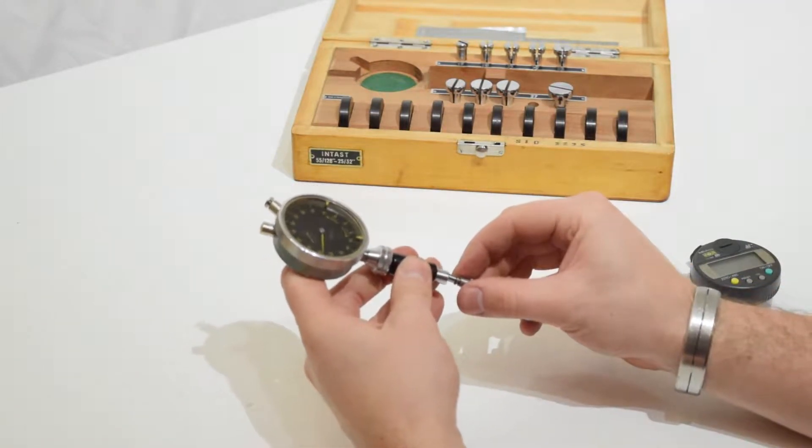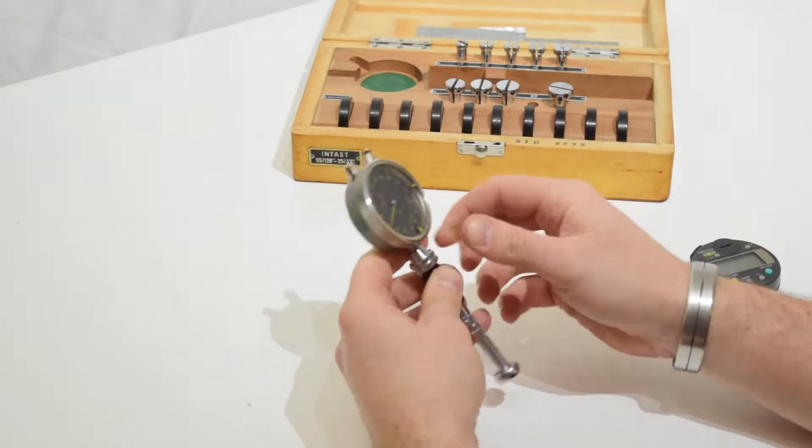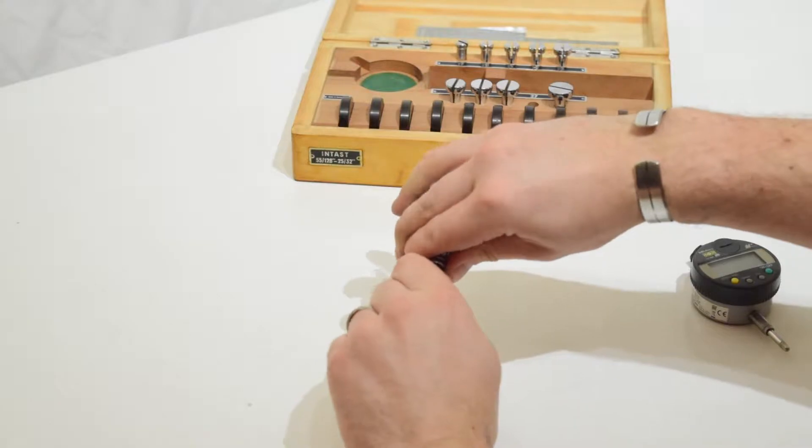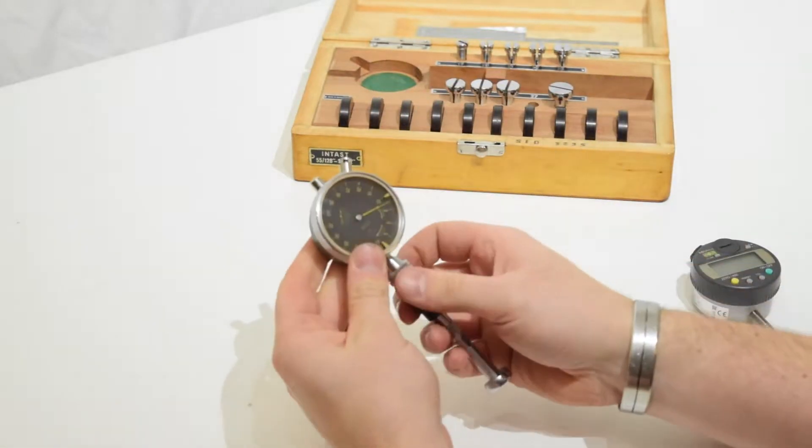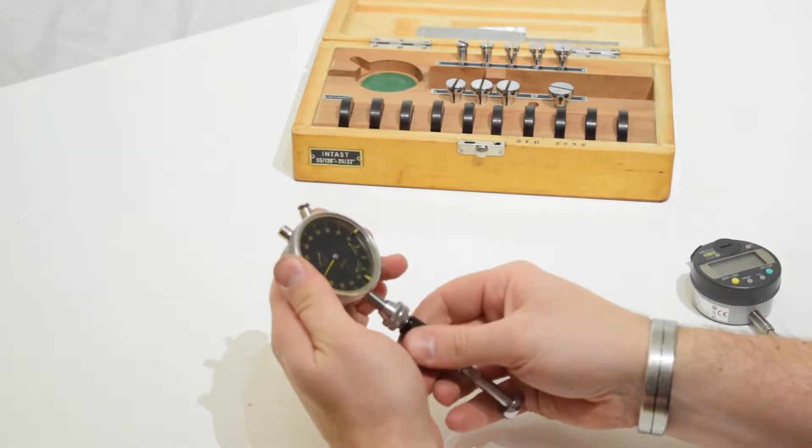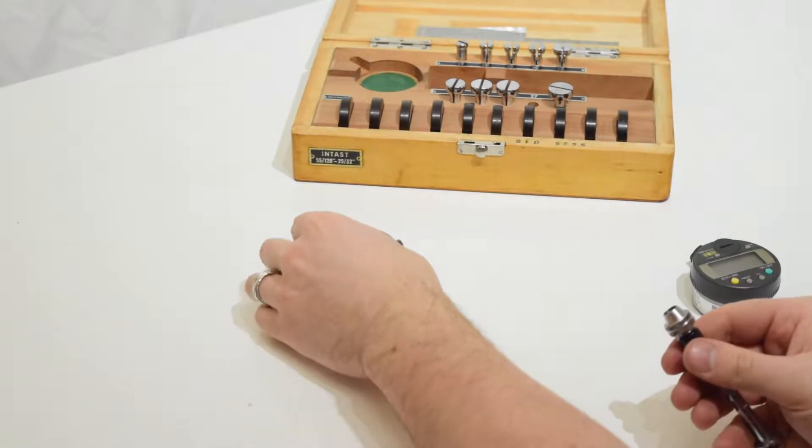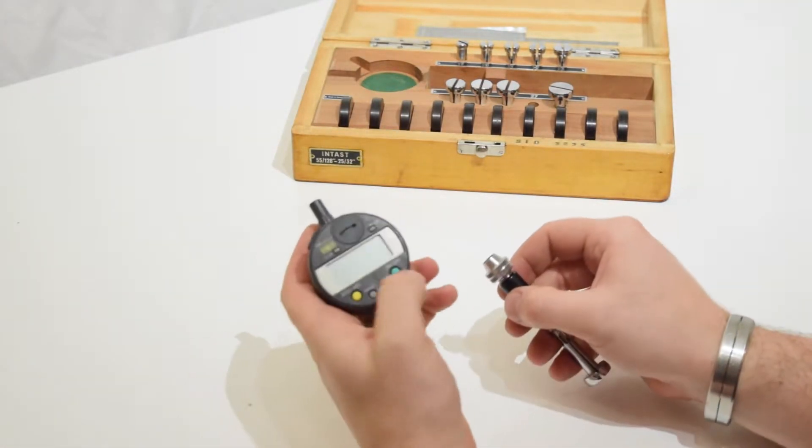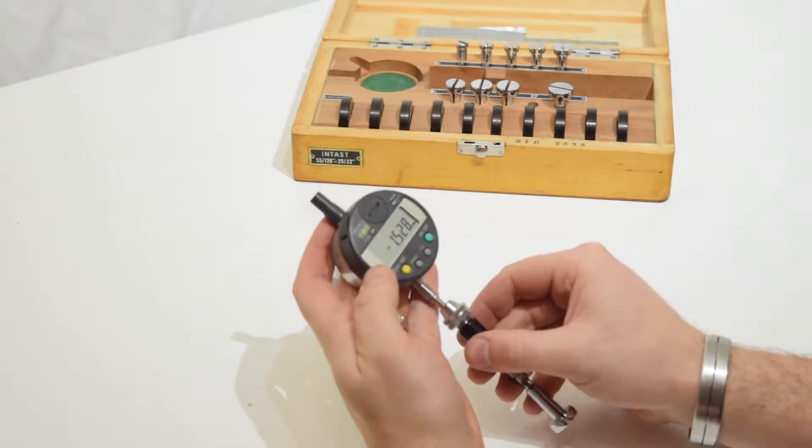But what I'm doing here is I'm just putting on another head, and I'll take out the Intast dial indicator here, just loosen off this nut, which has an expanding collet sort of grip. And I can insert the Mitsutoyo, which has the same shaft diameter, or stem diameter.